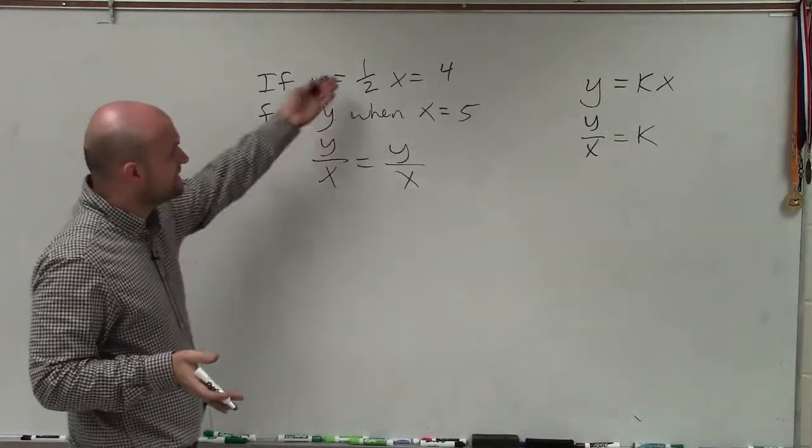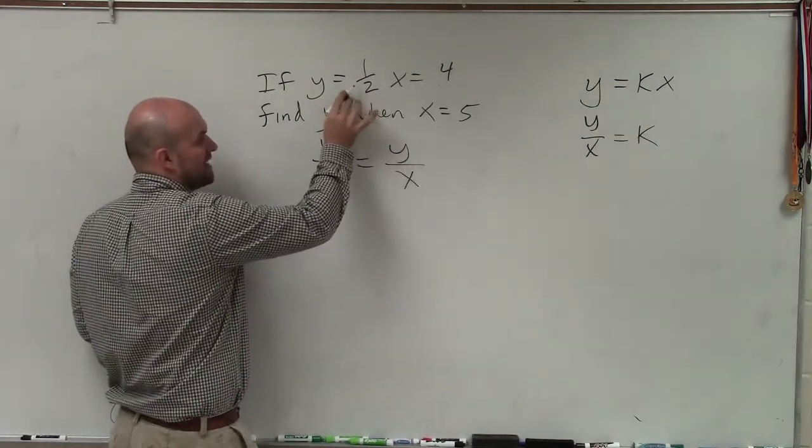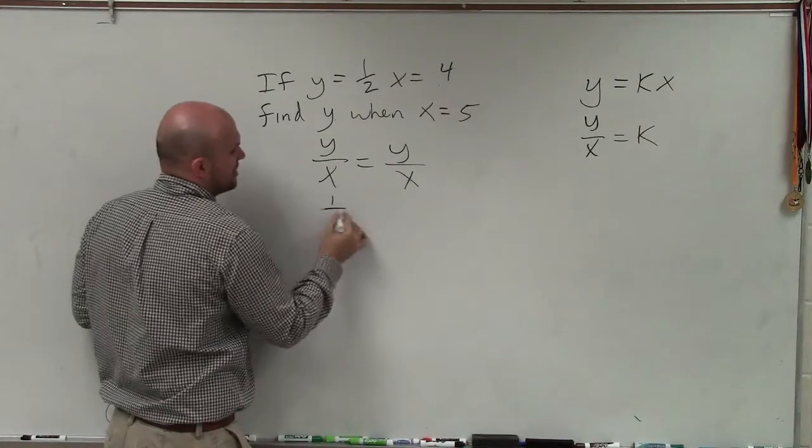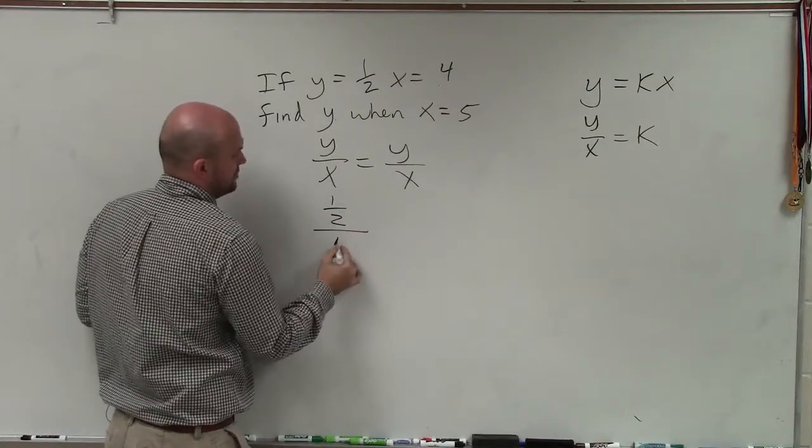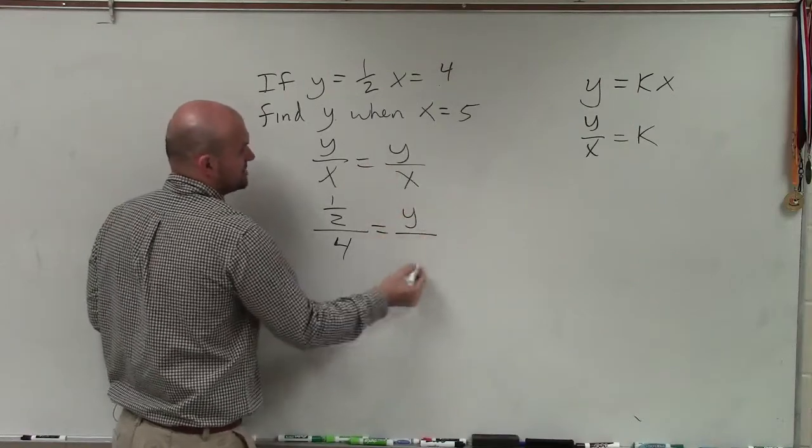Then all I simply do is plug in the information that I have. Now I know this is a fraction, but still that is what's equal to y. So I write 1 half is 2x, which is 4, is equal to this value of y, which we do not know, is equal to 5.